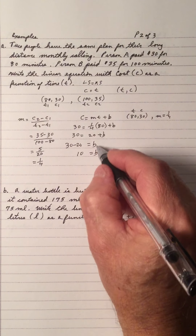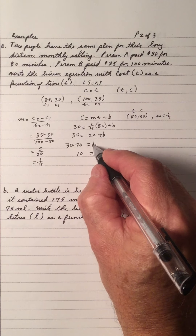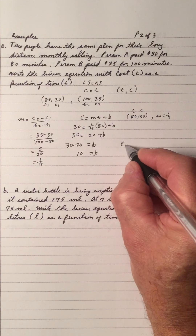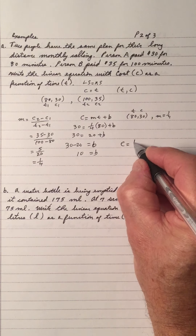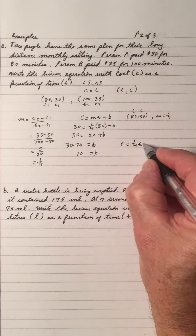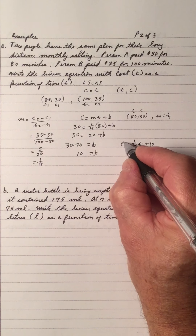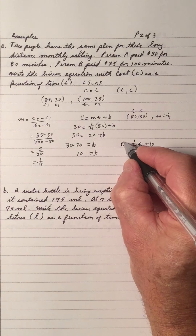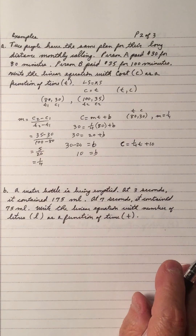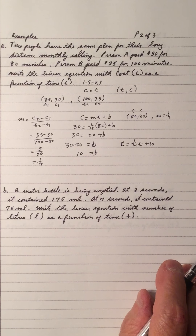And b is the intercept — the cost intercept. So we have the equation c equals (1/4)t plus 10. And that's the linear equation that represents this telephone plan.